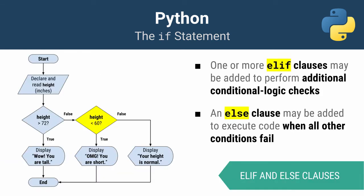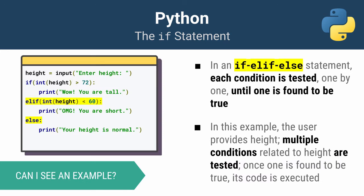What if I wanted to test multiple conditions? I can add optional elif or else clauses. Elif is short for 'else if.' For every additional condition I want to check I add an elif clause, and if no condition is met it will be handled by the else clause, which is also optional. I've added an elif to check whether someone is less than 60 inches tall, and a catch-all else clause that will simply print 'your height is normal.'